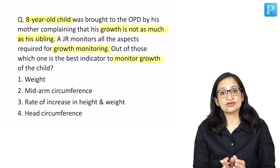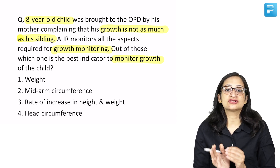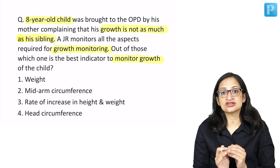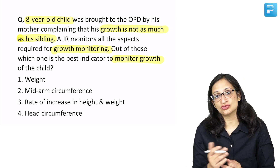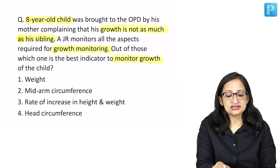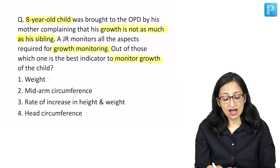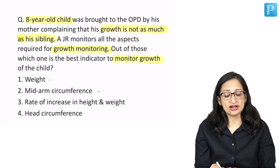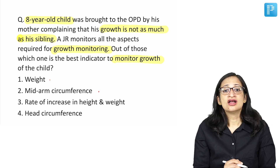Just mark the key words: we want to monitor the growth of the child — we want to see how the child is growing, whether adequately or not as per how he should grow. So will a single weight measurement give you the clue, or mid-arm circumference, or rate of increase in weight and height, or head circumference?